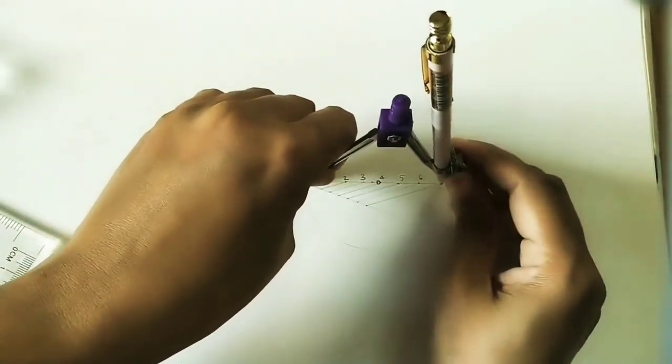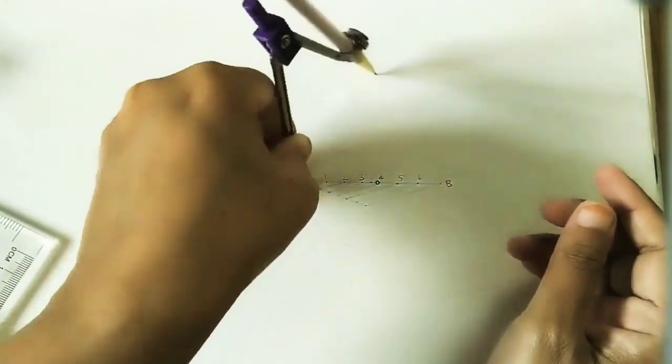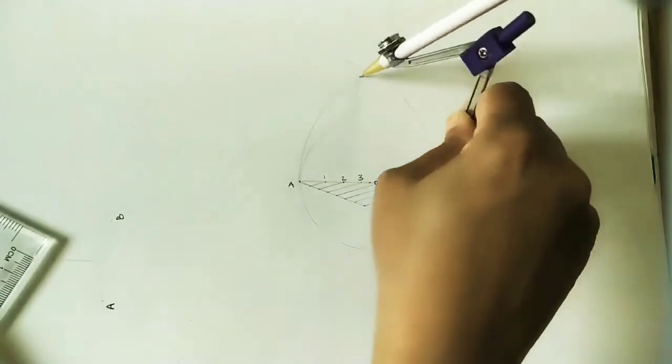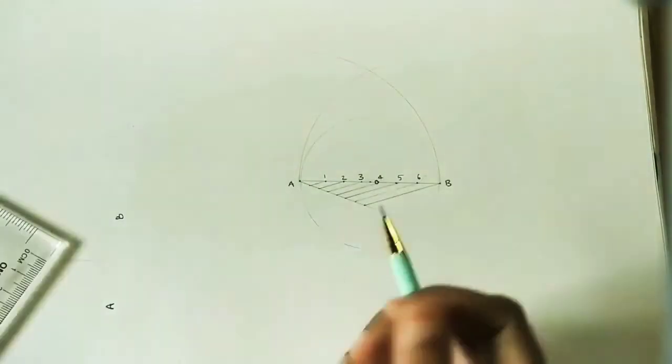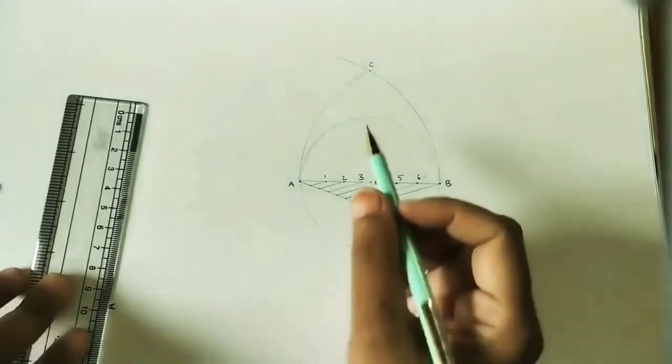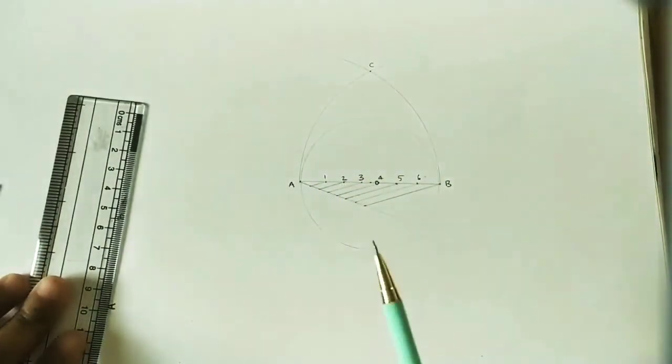Take A as center, AB as radius, and draw an arc up to some length. Similarly, take the same radius with B as center and cut that previous arc. We will get one intersection point. Mark it as C. Join C and 2, and extend the line.